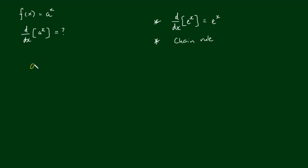For the function a to the power of x, we need to rewrite it in the form of e to the something. On the right hand side, if we apply the natural log to a to the x, the two sides are no longer equal — but using a little trick, we raise the right hand side to the power of e, and since e and natural log are opposite functions they cancel each other out, giving back a to the power of x.